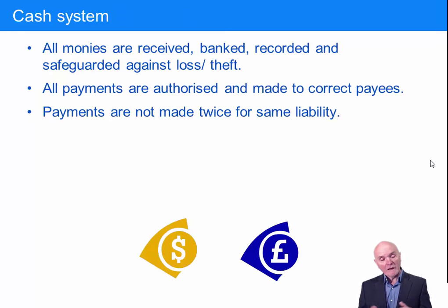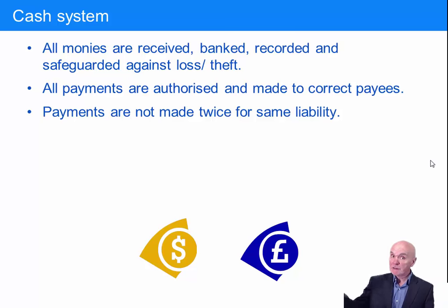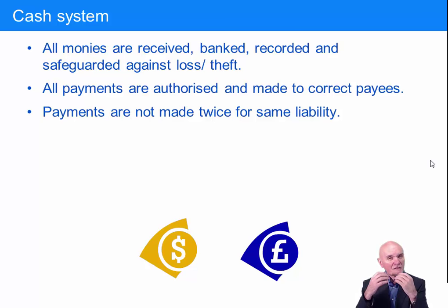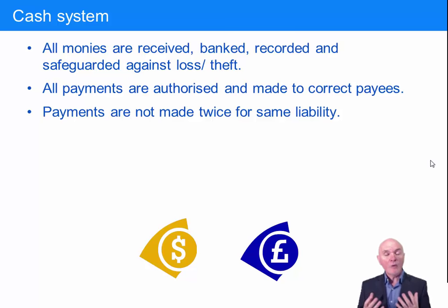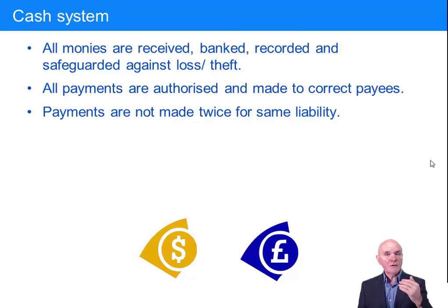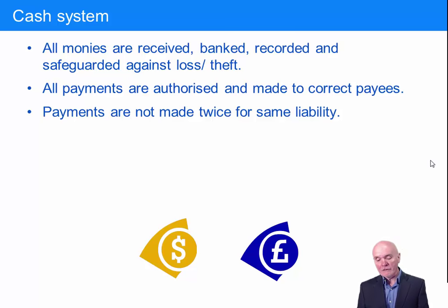All I'll say about the cash system is that we've dealt with quite a bit of it already through the purchases, sales, capital expenditure, and wages systems. The key additional point is that cash must be banked quickly to safeguard against theft or loss. The more money you have in a bank, the less overdraft interest you may be paying, and you get a much clearer picture of your cash flow position rather than money sitting around in random places.